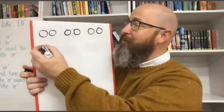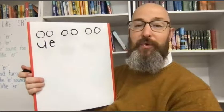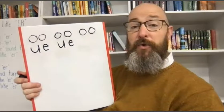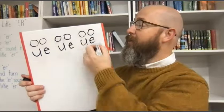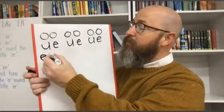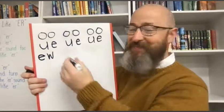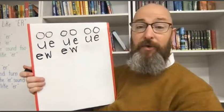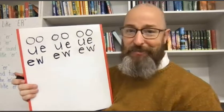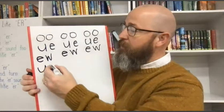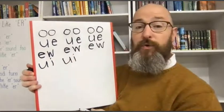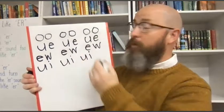Next, let's do UE — OO, OO, OO. Next, we'll do EW — OO, OO, OO. And last, we'll do UI — OO, OO, OO.